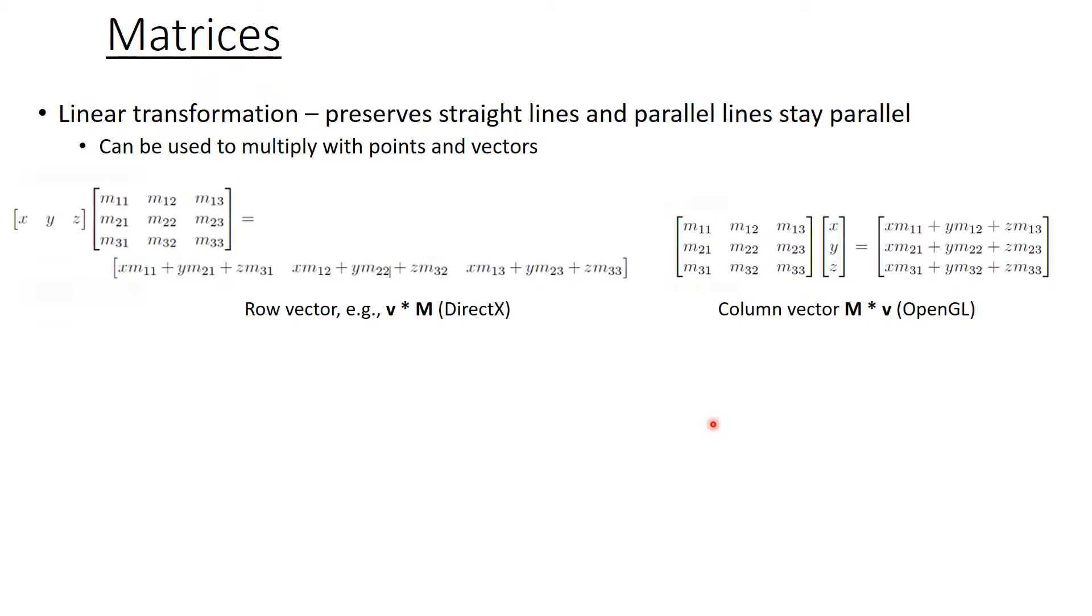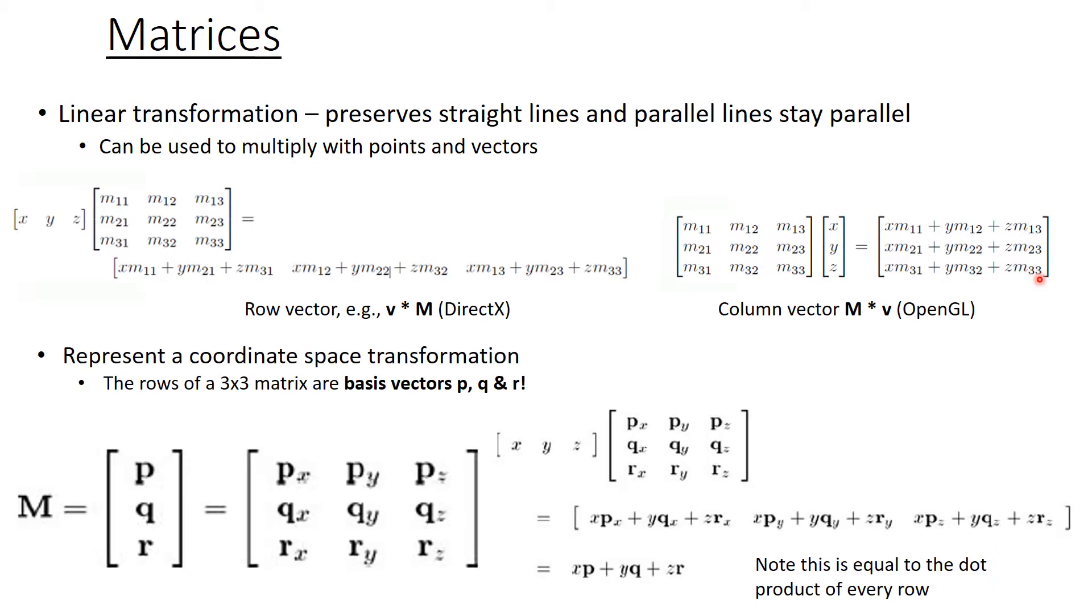In terms of basis vectors, this is where matrices are quite useful. You can multiply vectors with matrices to change the vector. Here, for example, in row vector form or in column vector form. Note that the results are different and are transposed. So basically, matrices represent a coordinate space transformation. And this is because the rows of a matrix are these basis vectors I was talking about. Note also that the row is always equal to the dot product, so it's equivalent.